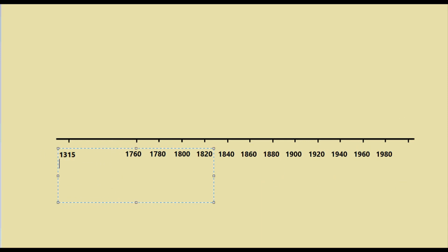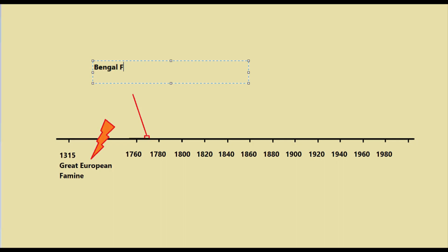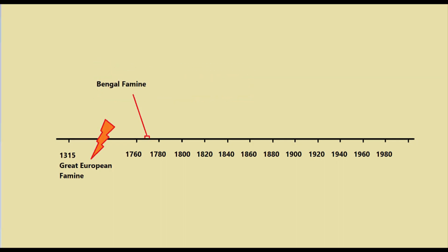Sometimes there may be a huge gap between one event and the other events. It may be necessary to use a break in the scale using a symbol which looks like a lightning bolt to make the timeline fit comfortably on the page. There's a huge time gap between the 1315 Great European famine and the 1769 Bengal famine, so I will put a break in the line between these two events.